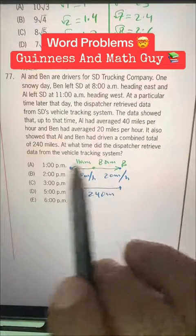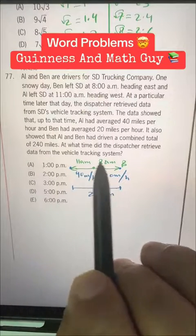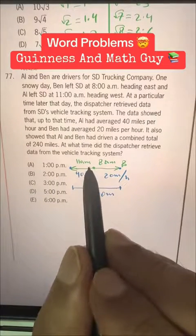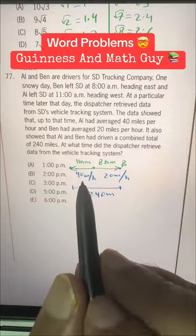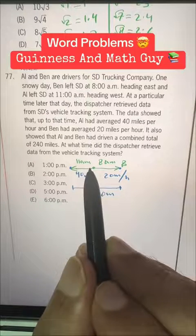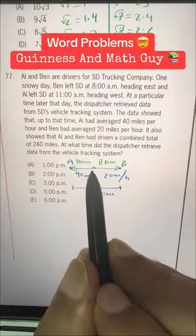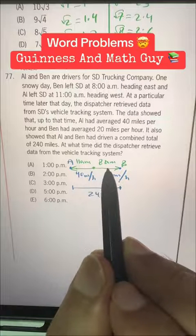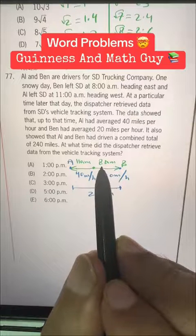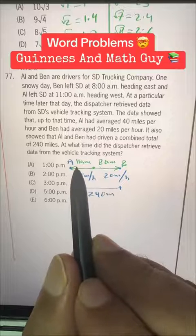At what time did the dispatcher retrieve data from the vehicle tracking system? Now be careful here. The first thing to note here is Al started three hours after Ben, right? Ben started at 8am and Al started at 11am.